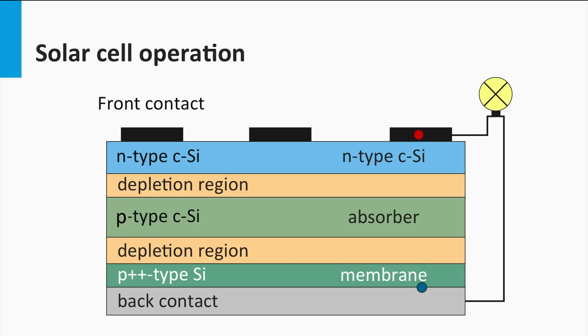Then the charge carriers have to be collected at the contacts. In this example, the contacts are connected with a load, in this case a lamp. The electron will move through the load back to the solar cell. Both charge carriers recombine at the metal P-layer interface.